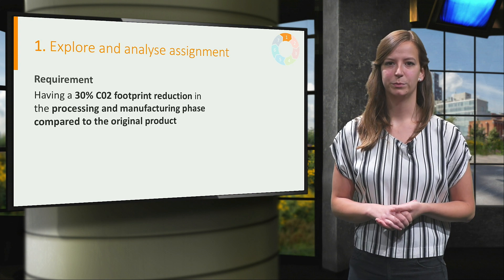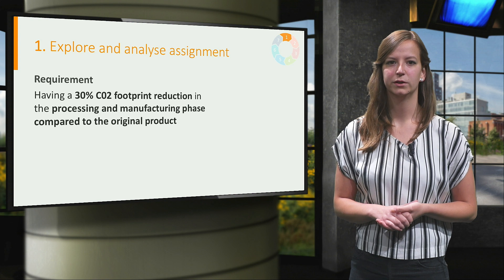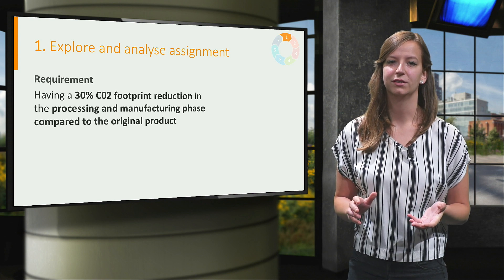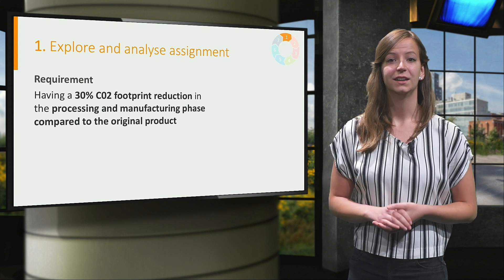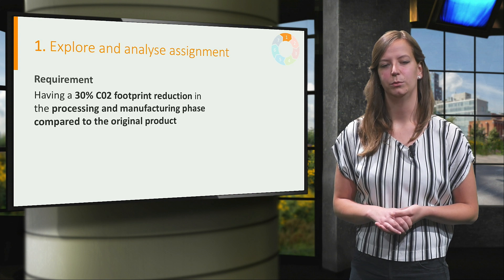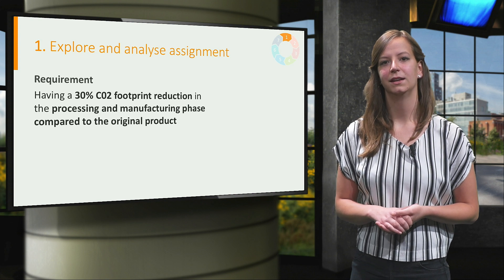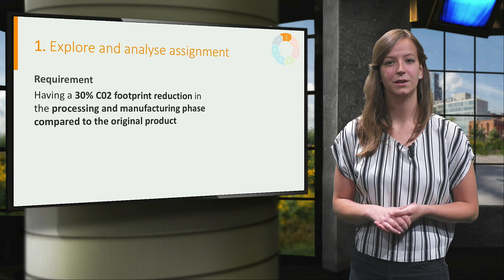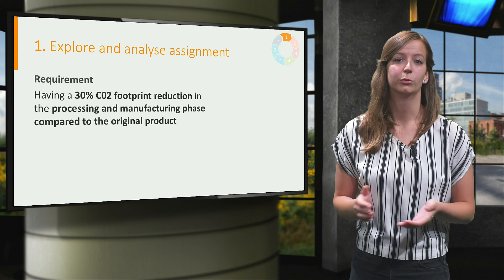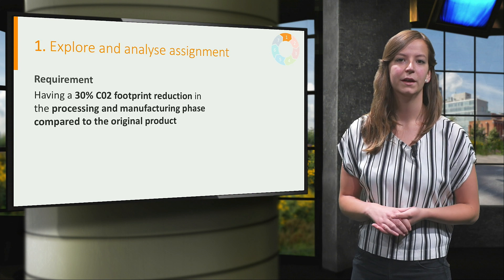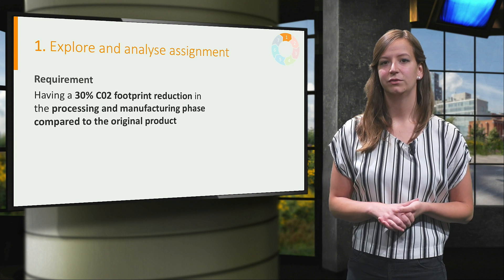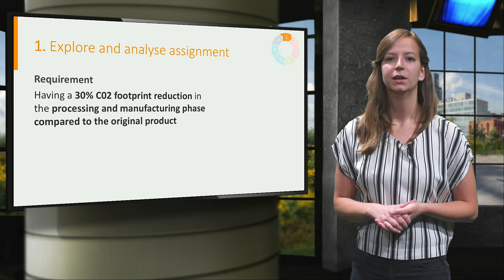Having a 30% CO2 footprint reduction in the processing phase and manufacturing phase compared to the original product. This is, compared to the previous one, a proper requirement we can design for and which can be assessed. Keep in mind that many other requirements could be thought of, and in the case of sustainability requirements it is usually good to have more than one. After the requirements are defined we continue to the next phase.